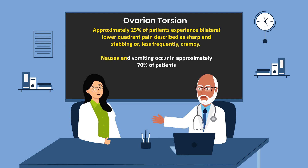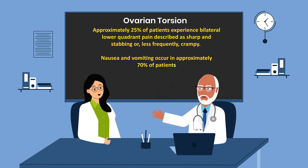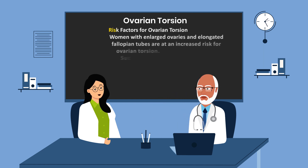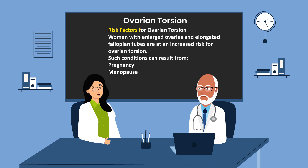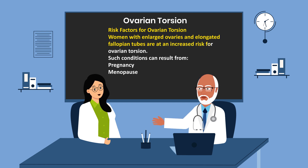Nausea and vomiting occur in approximately 70% of cases. What are the risk factors for ovarian torsion? Women with enlarged ovaries and elongated fallopian tubes are at an increased risk for ovarian torsion.